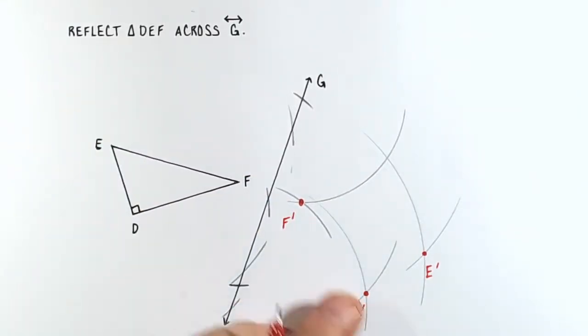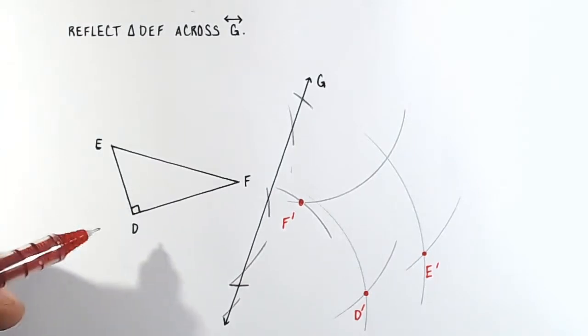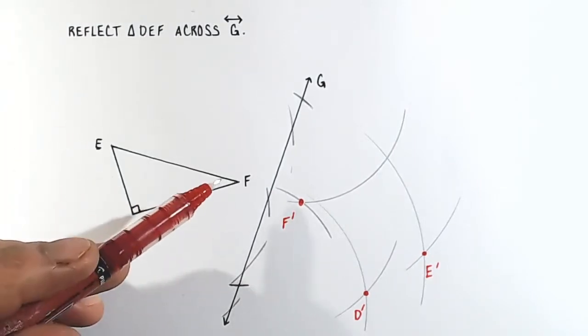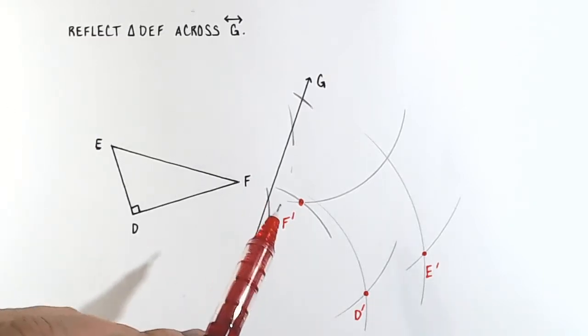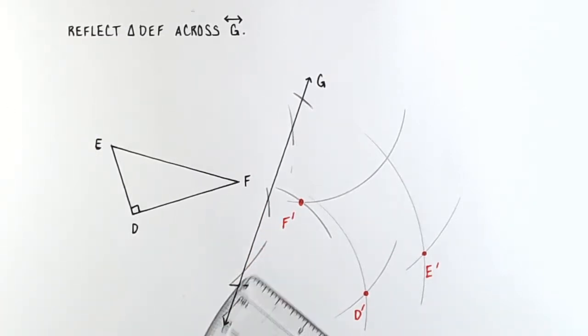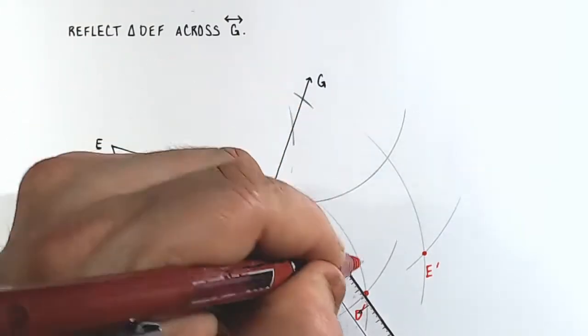Now we can connect all of our lines. And notice how the angle EDF is a right angle. So we should see E prime, D prime, F prime form a right angle as well. So we'll connect those dots.